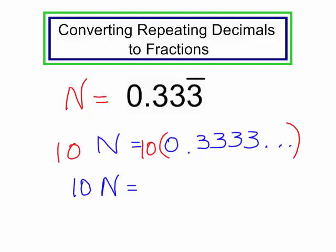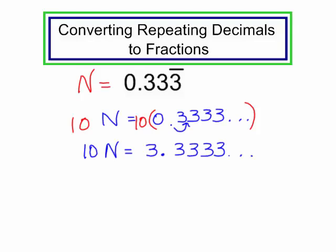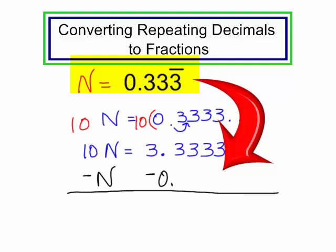On the right, when I multiply by 10, I just move that decimal point one place to the right, so I'd have 3.3333 and so on. Now I'm going to subtract n from both sides. On the left side, minus n; on the right side, I also subtract n. Remember, n is 0.33333 repeating — that's the same thing. I subtracted n from both sides.